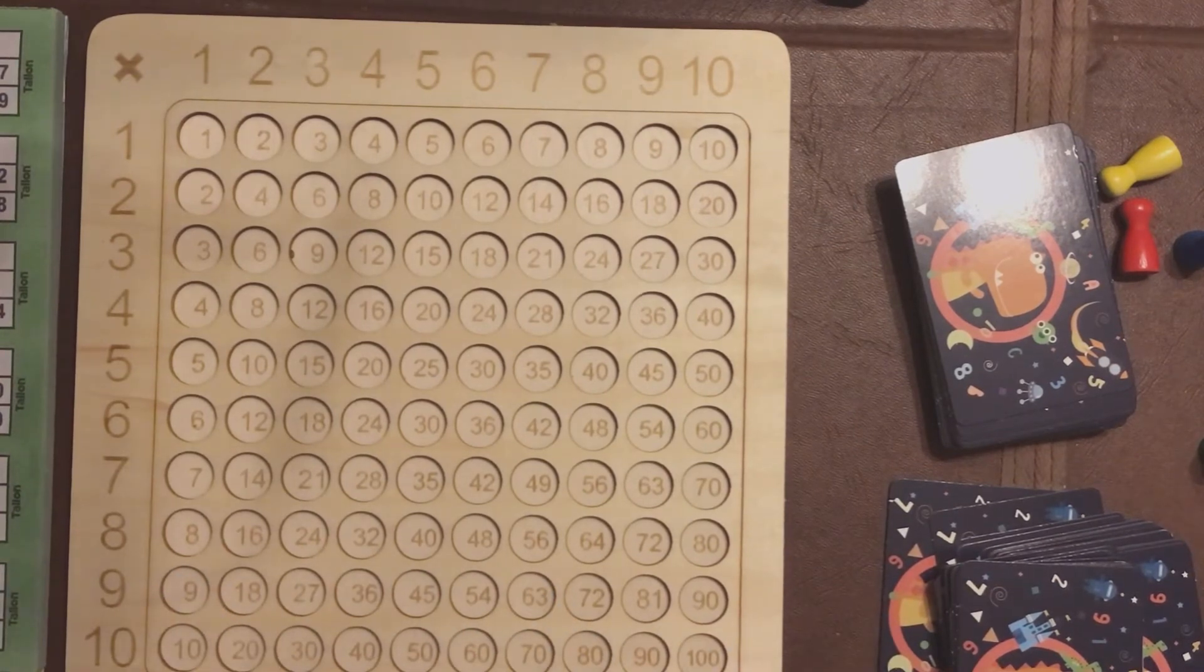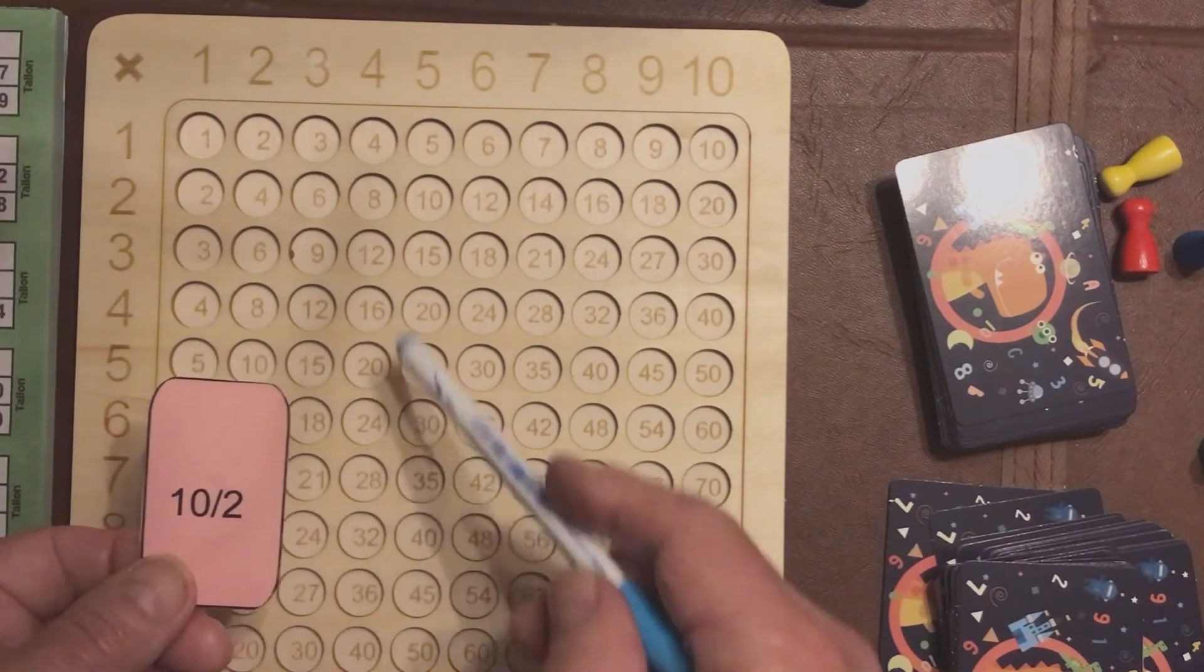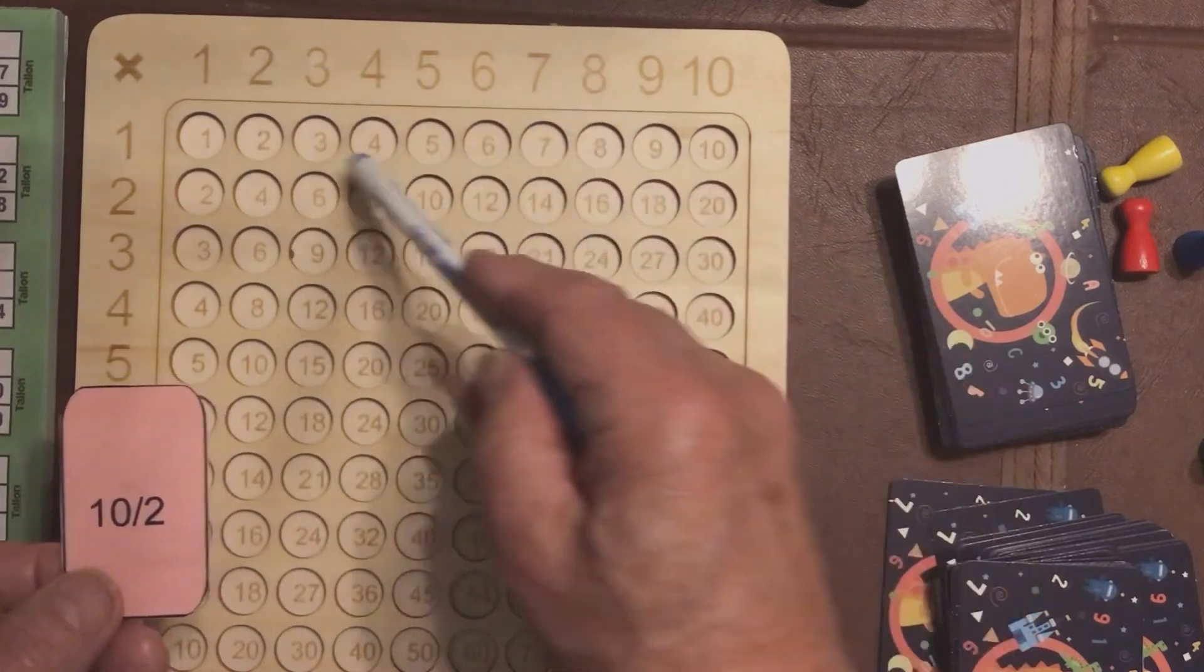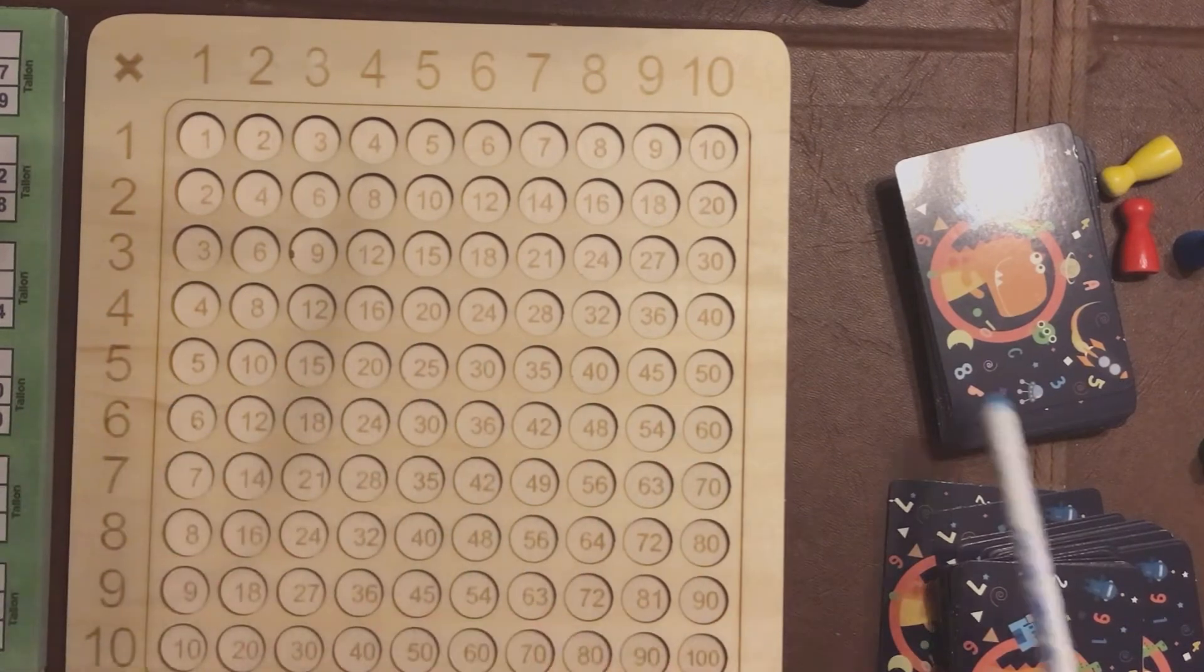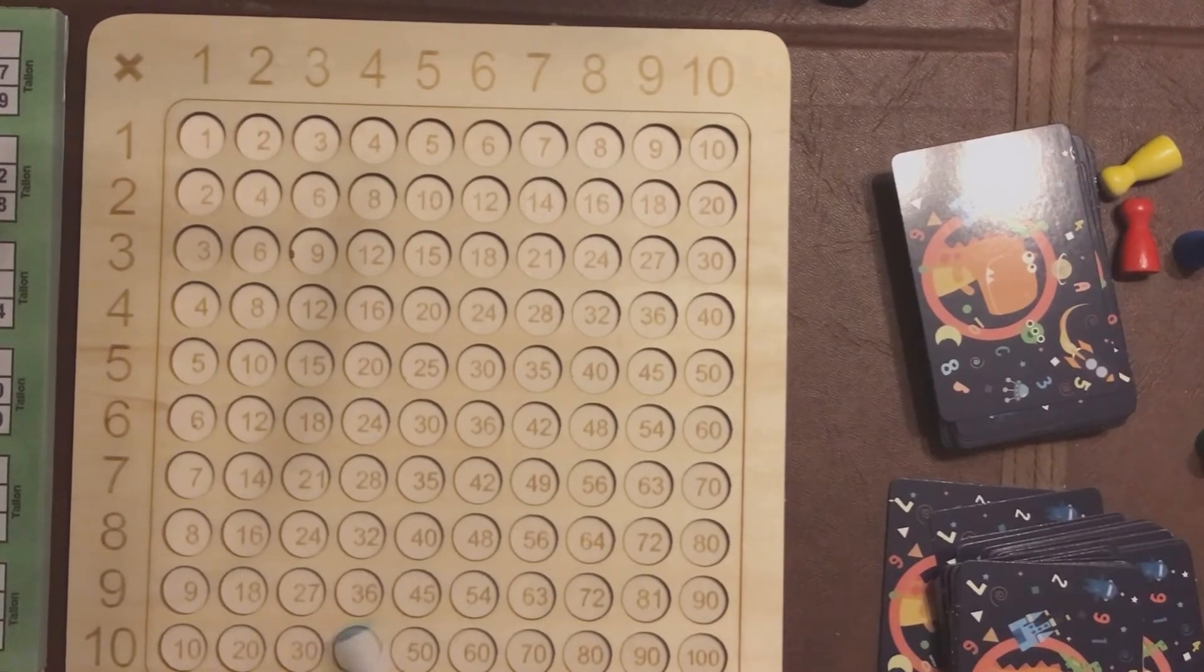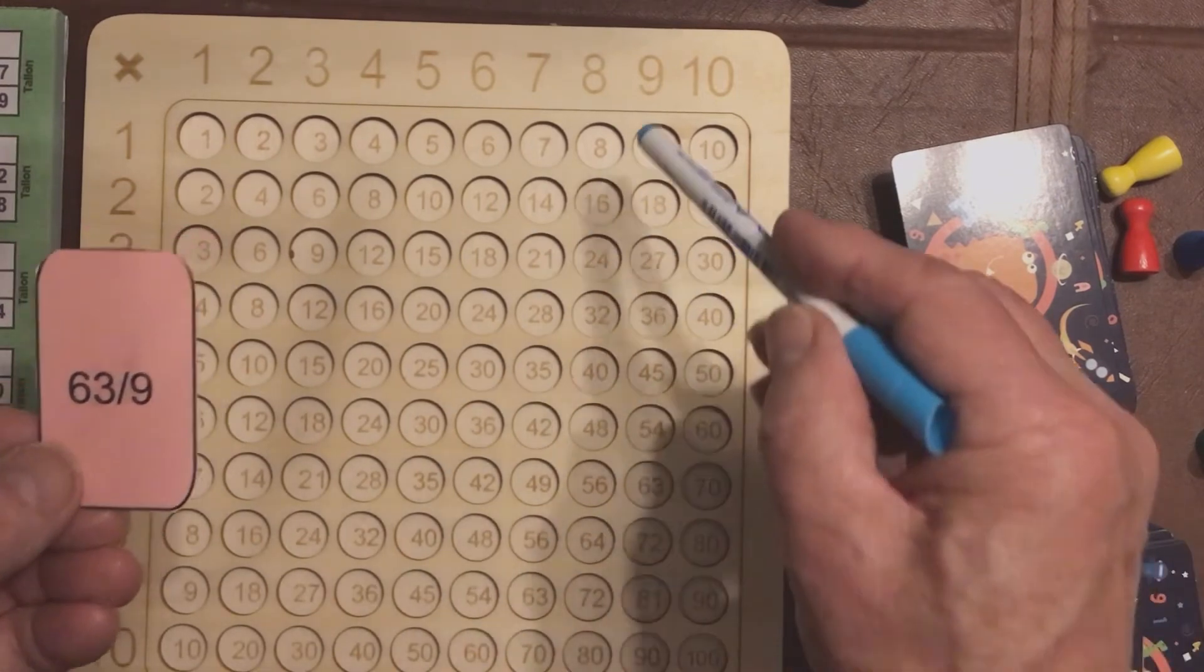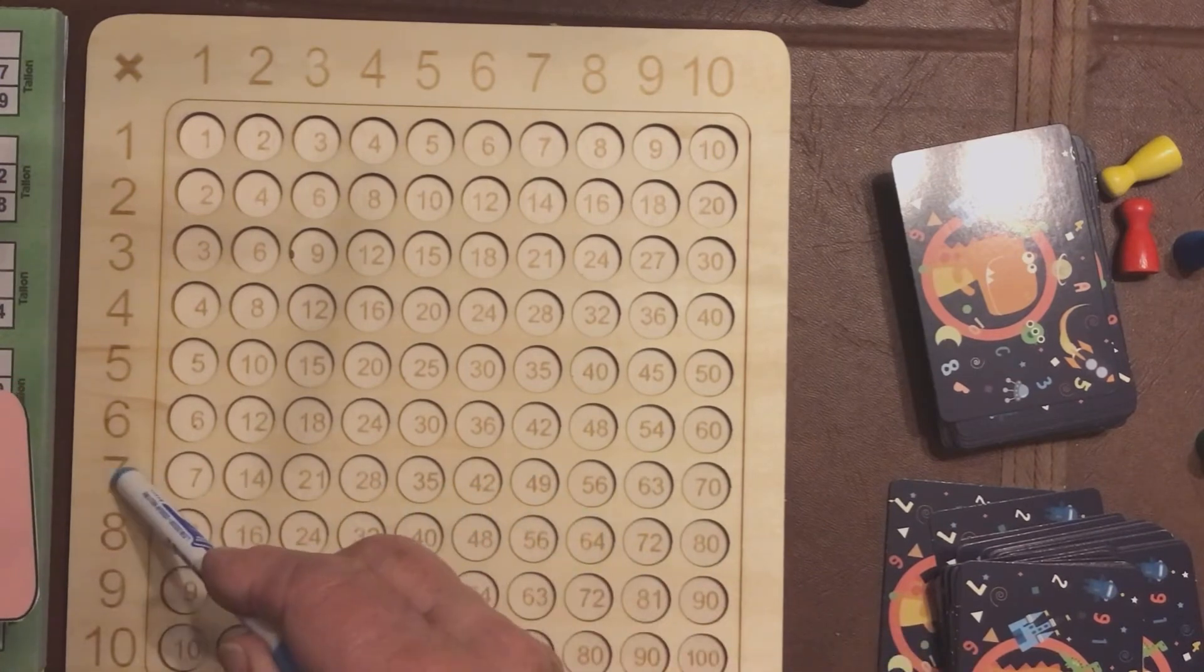Another one, a fairly easy one, 10 divided by 2. Okay, go to 2. So, you go to 2 until you find 10, which is 5. And another one, 63 divided by 9. 63 divided by 9. So, you go to 9, go down to 63, and you get 7. 63 divided by 9 is 7.